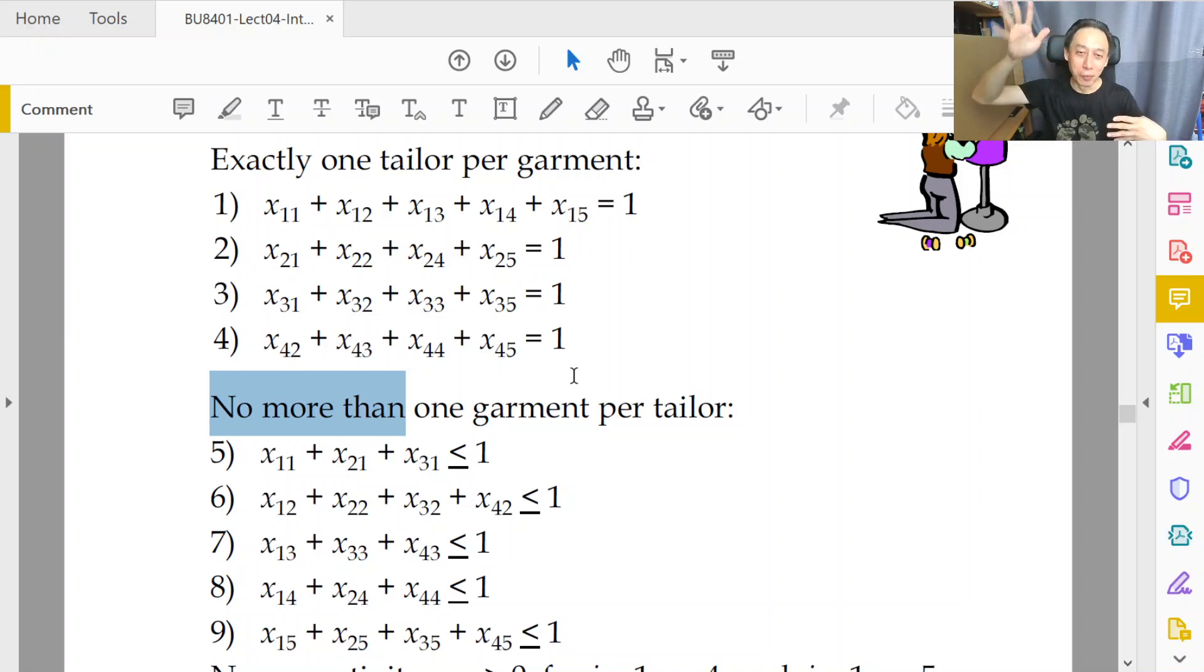Because if it's one to one, then it is impossible to match four to five. So we must allow for the possibility that one of the tailors, we don't know who yet, will get zero number of garments. But otherwise, the rest of the tailors will get at most one, at most, maybe zero, maybe one. So we use less than equal to one.